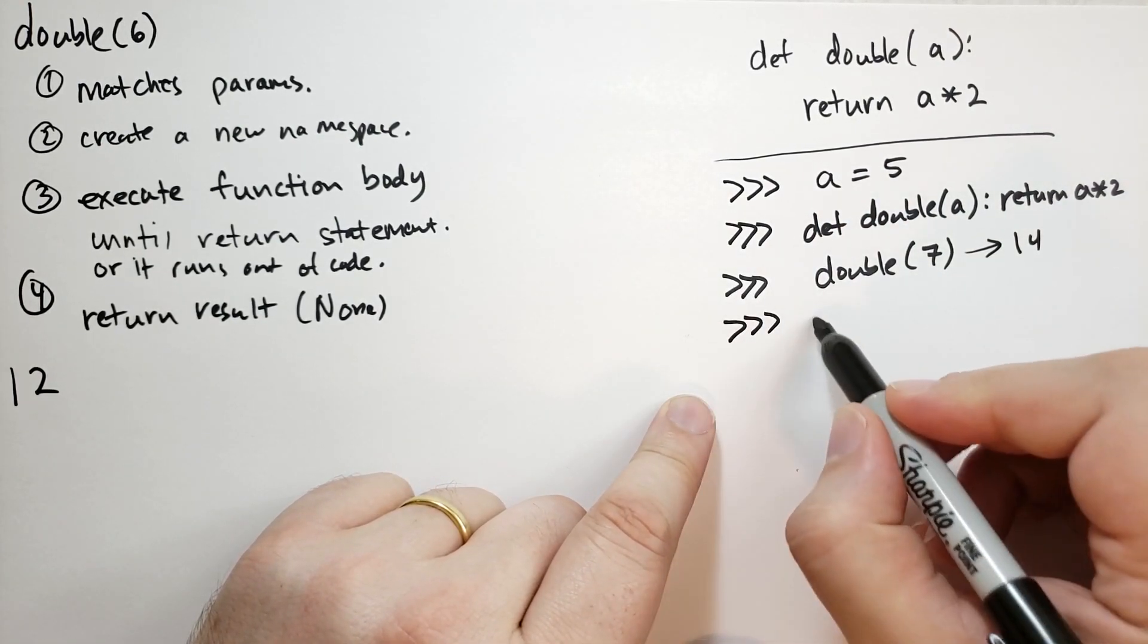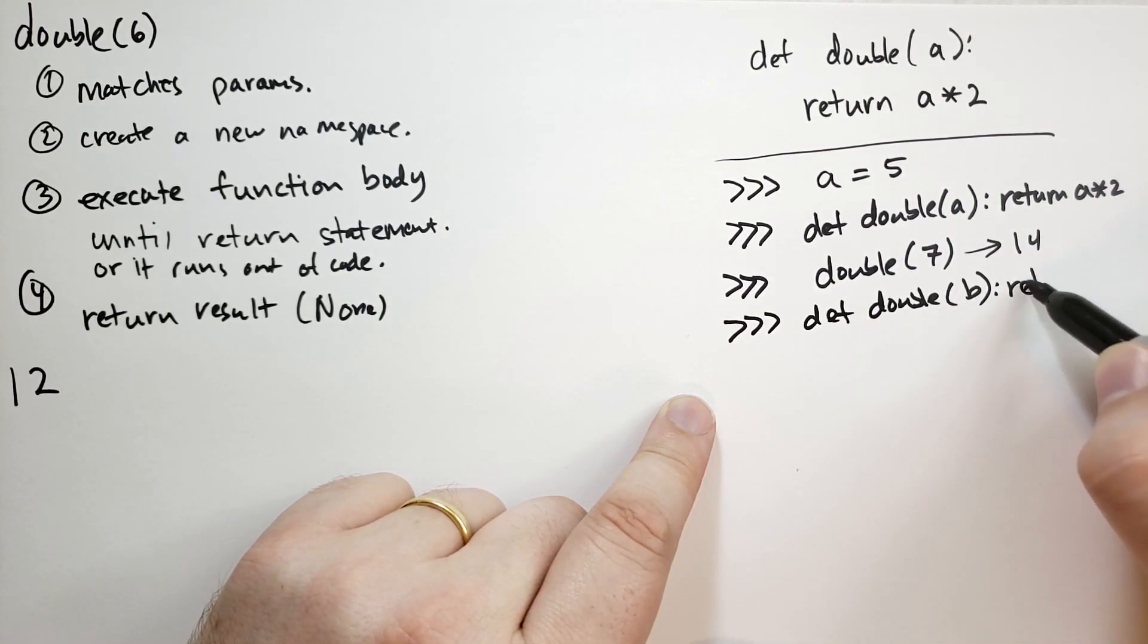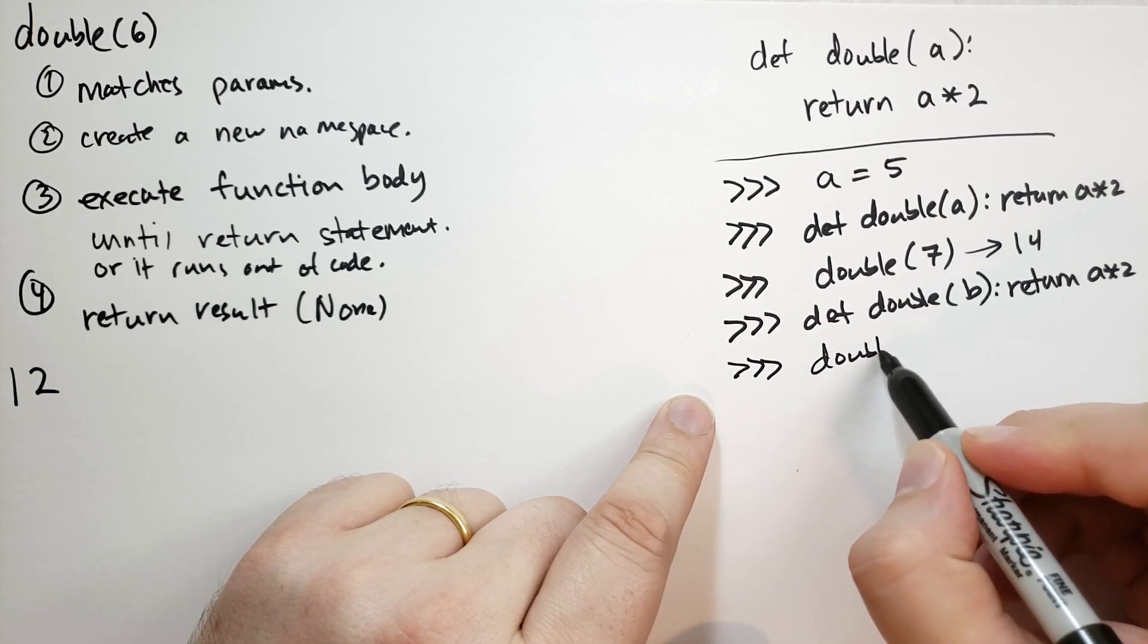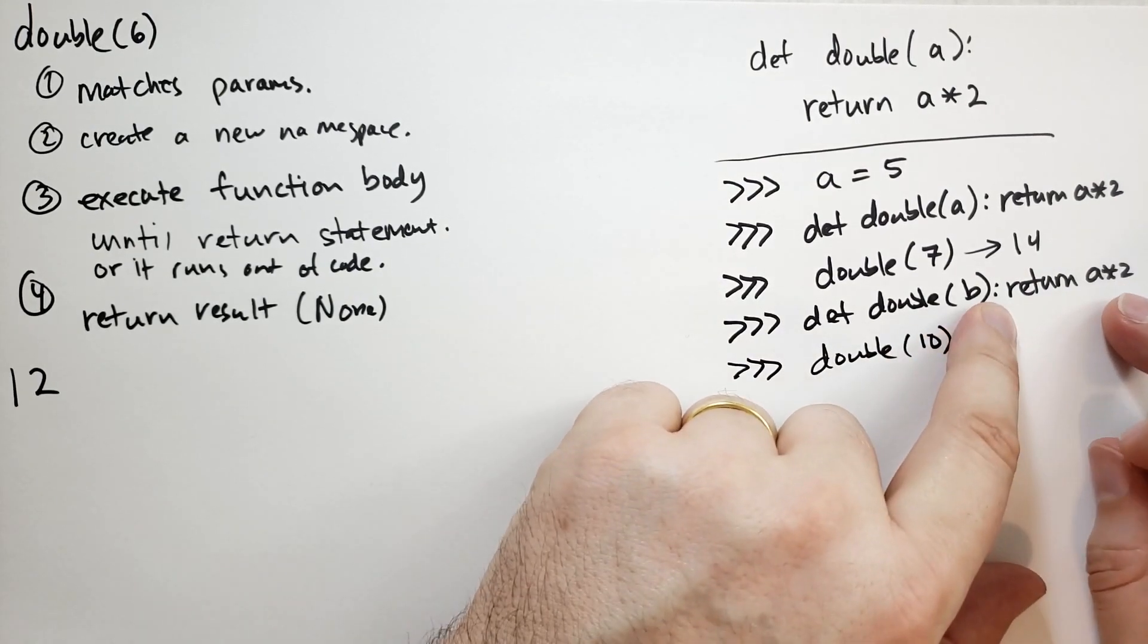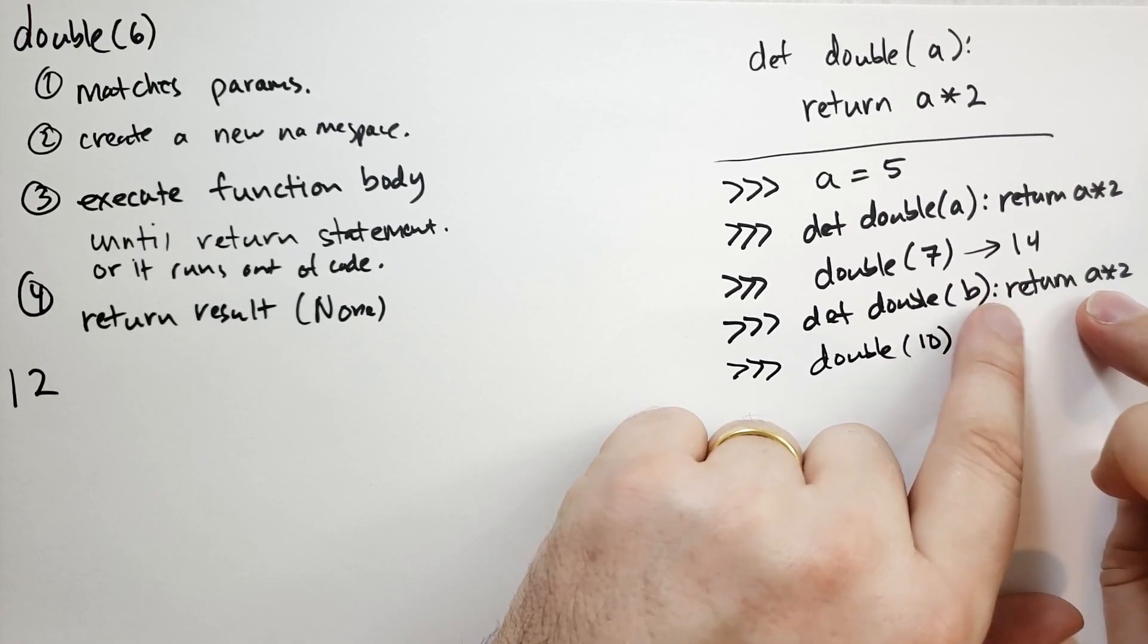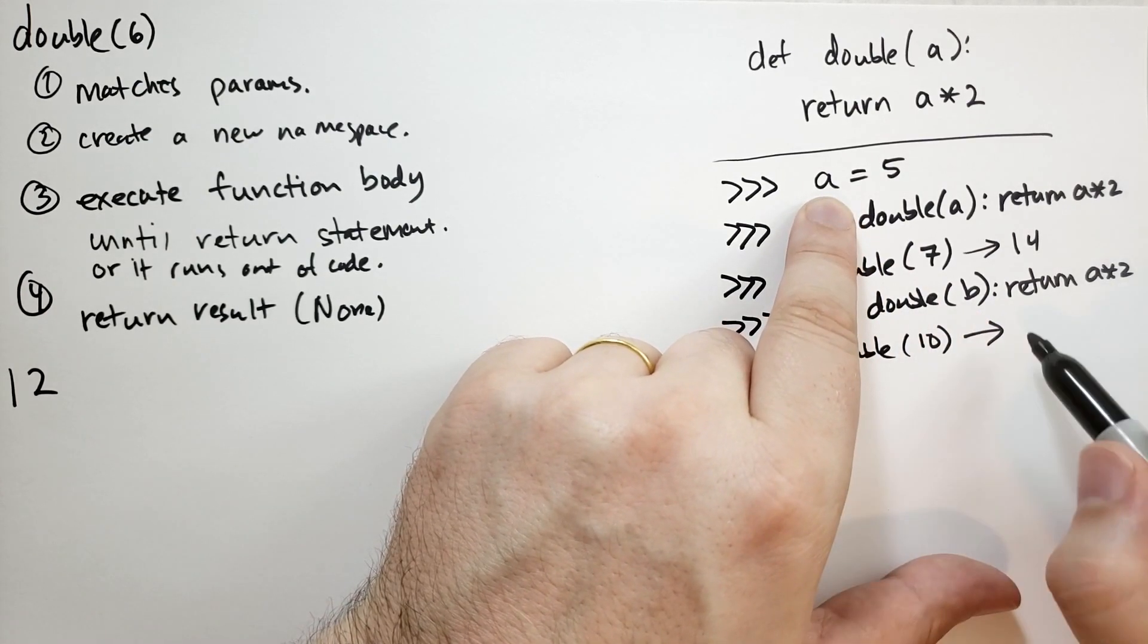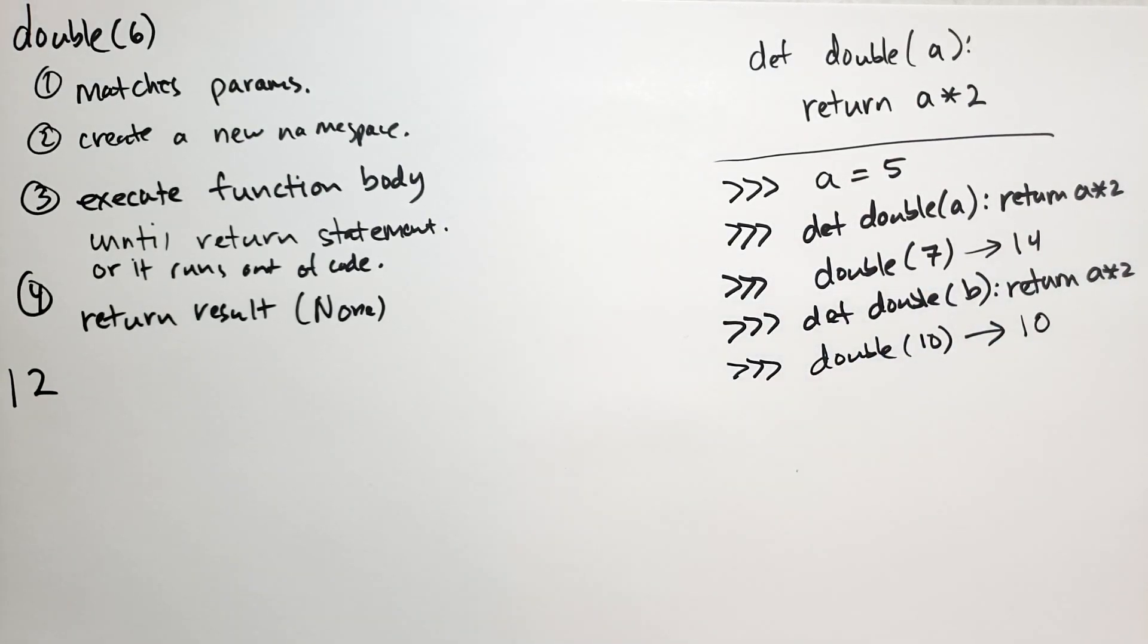If we change double, so we say def double, let's say B, and we're going to say return A times 2. Then when we call double, let's say 10, what's it going to return? Well, it's going to invoke this statement in the local namespace with B set to 10. But in this case, we're looking at A, not B. So it looks in the local namespace, it doesn't see an A, so then it goes to the global namespace. It sees A is 5, so it is going to return 5 times 2, which is 10. That's the result of that thing.